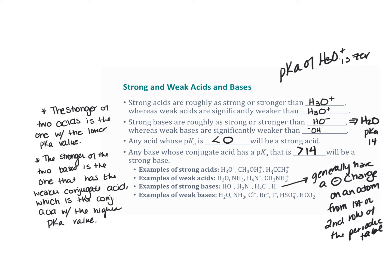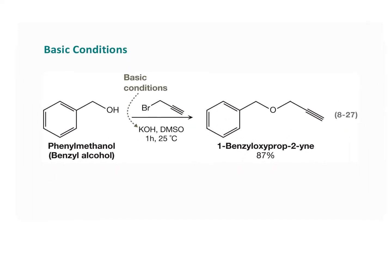Let's work on applying these ideas towards substitution reactions. Looking at this substitution reaction, we can recognize it's a substitution because we have bromine as our leaving group and a new bond is formed — the R group is substituted for the hydrogen on the OH. The oxygen stays, but we substitute out that hydrogen. This is under basic conditions, which we recognize because we have OH-.